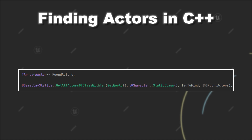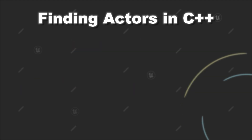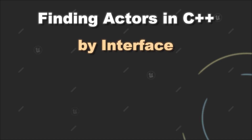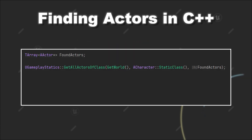You can also use GetAllActorsOfClassWithTag if you want to find Actors that inherit from a specific class and also have a specific tag. Lastly, you can also search for Actors that implement a certain interface by using GetAllActorsWithInterface, passing the interface as the second parameter. From all of those methods, in the end you have a TArray with the Actors that were found.